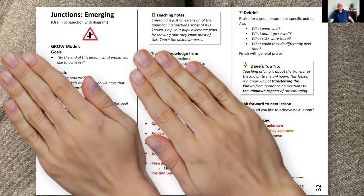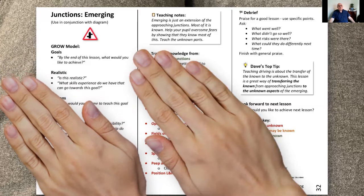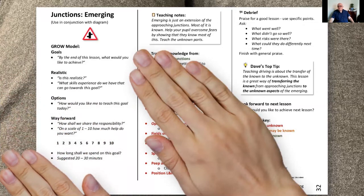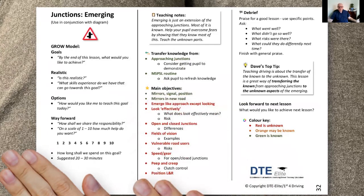I'd have a conversation with my pupil about what they're trying to achieve today. When I've covered the goals, my hand would come down again and I'd talk about what's realistic — covering a recap of what they did last week. Coming down further, we discuss the options: how would you like me to teach today? Then coming down to the way forward. Eventually I sort of swap hands coming down the other side, checking things like approaching junctions and the MSPSL routine.